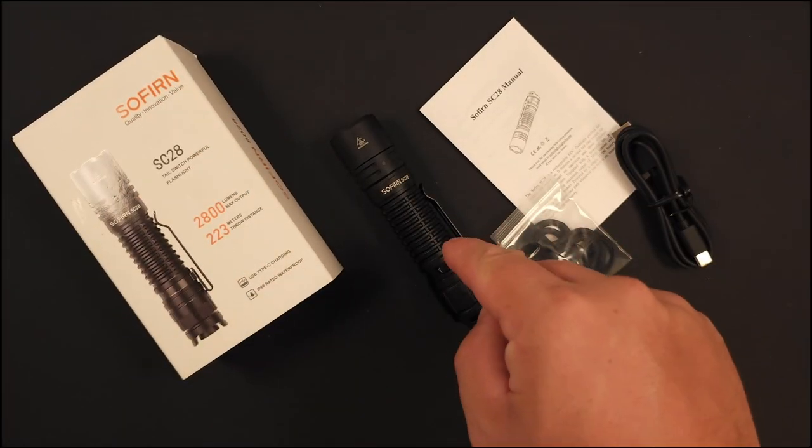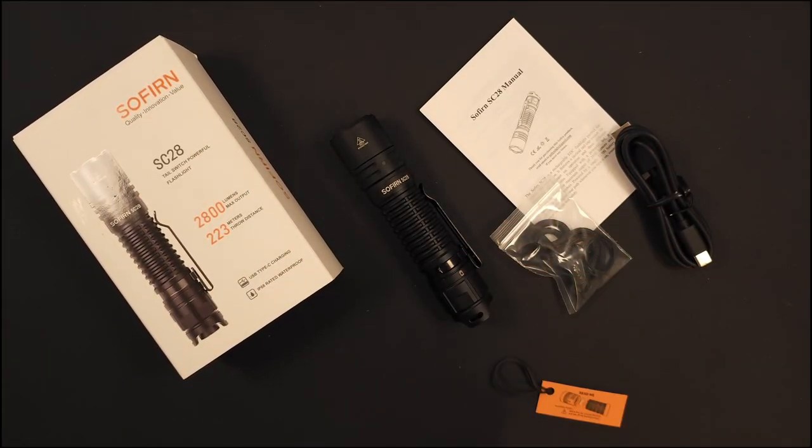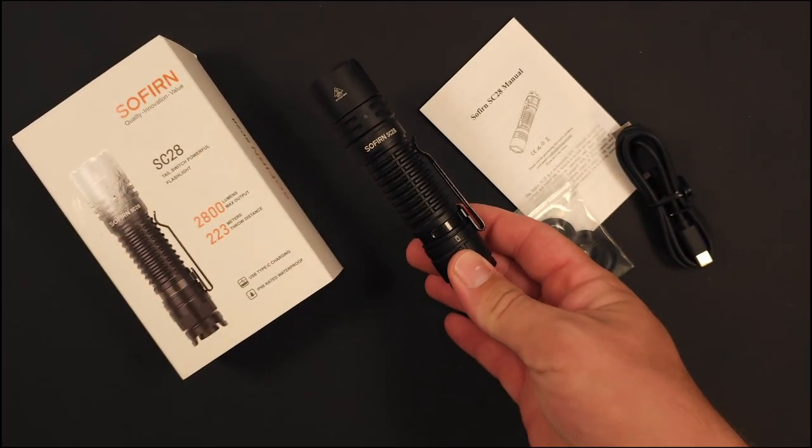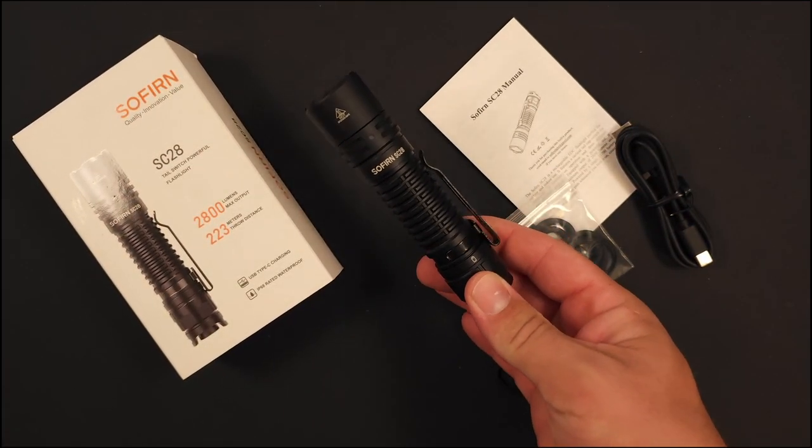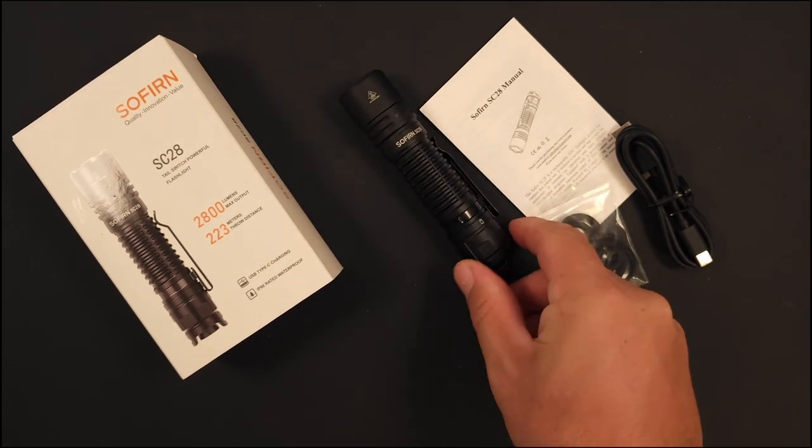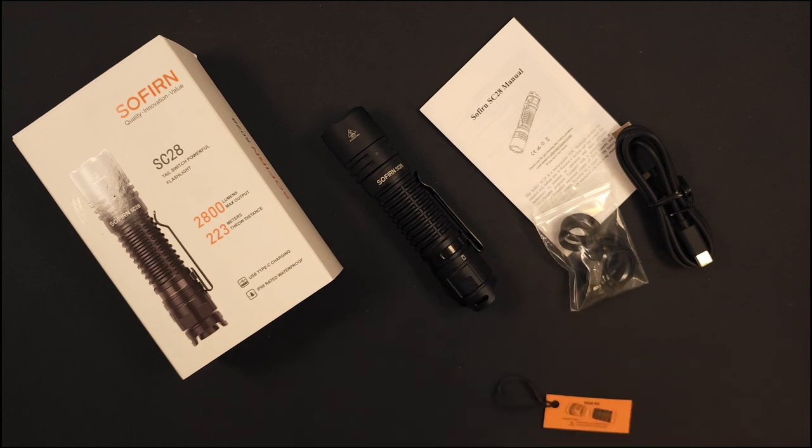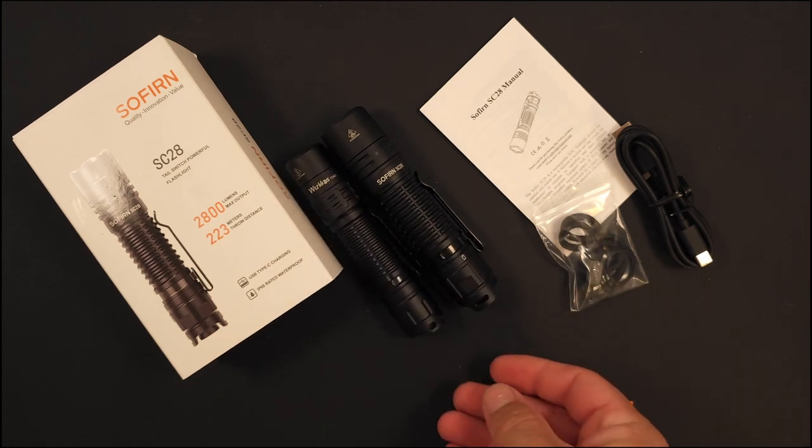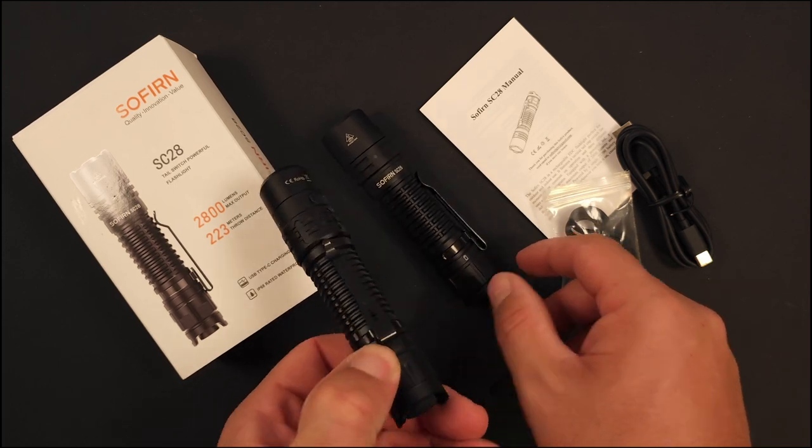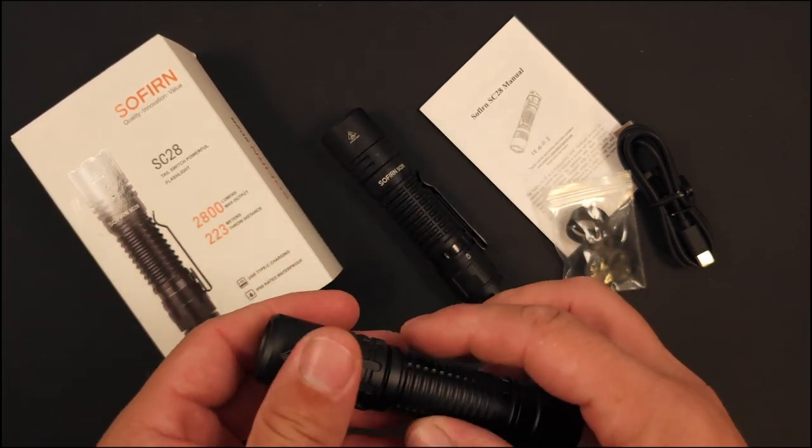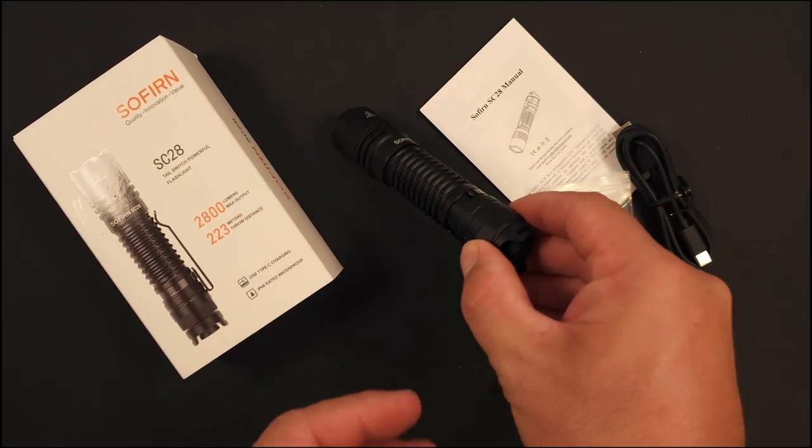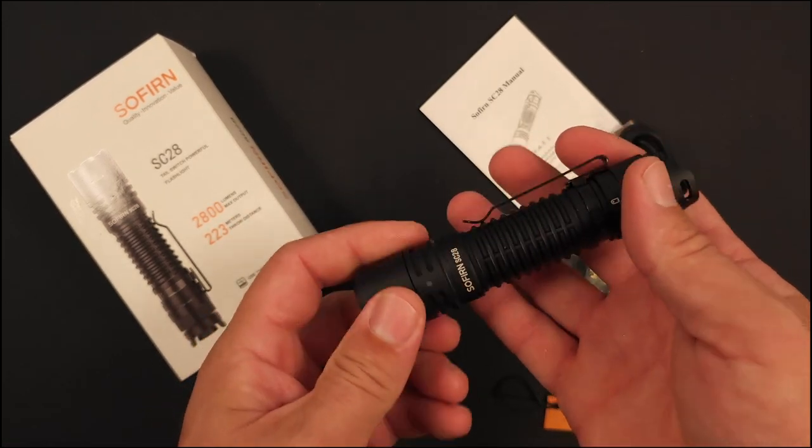We got the Sofirn SC28. This is the 21700 version of a light I've been incredibly happy with and had on my person for quite a while. Sofirn came out with the SC28, and this is the Wurkkos TD02. They look like they're cut from the same cloth, for good reason - they basically manufacture each other's lights. The Sofirn SC28 is an incredible light that we'll get into right now.